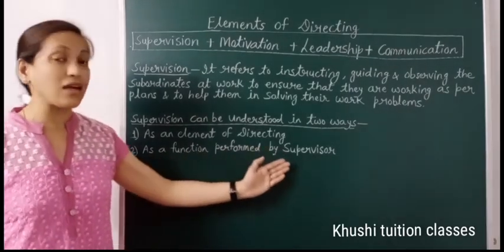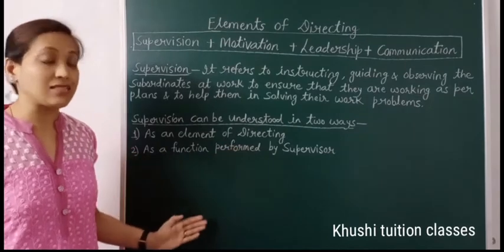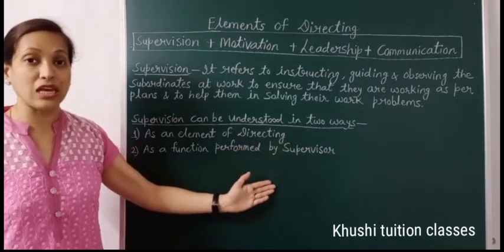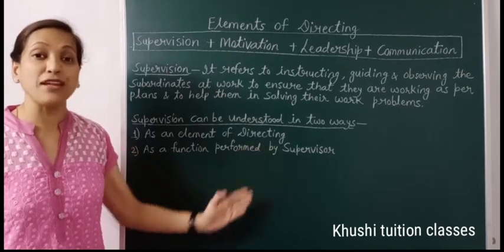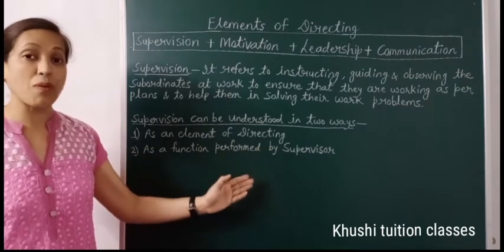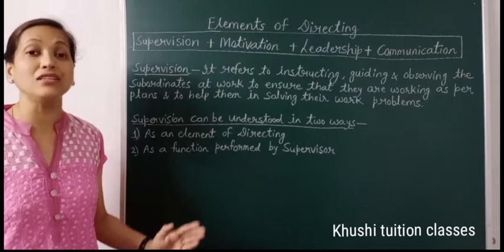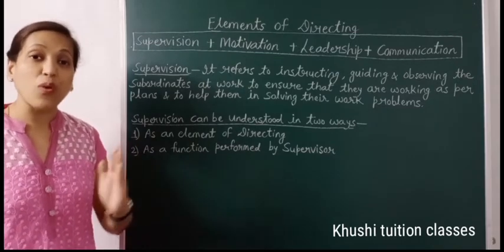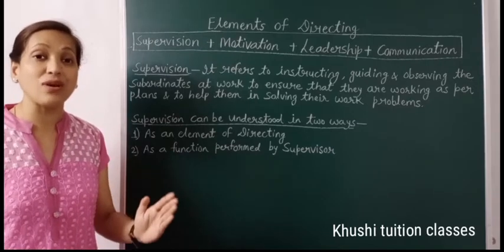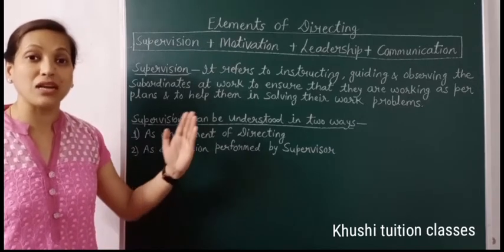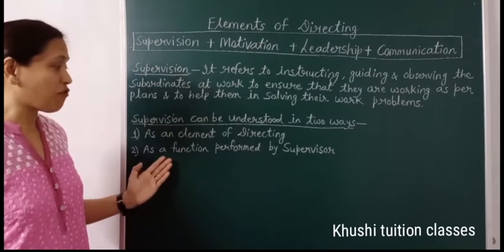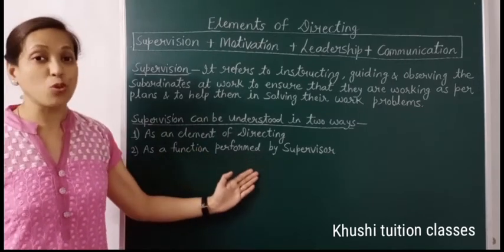The second is as a function performed by supervisor. Organization में supervisor की एक post होती है. यह supervisor management और workers के बीच में link होता है. यह supervisor management के plans, policies अपने workers को बताता है, और workers की report, उनके grievances, suggestions management तब convey करता है. So, this is the function performed by supervisor.